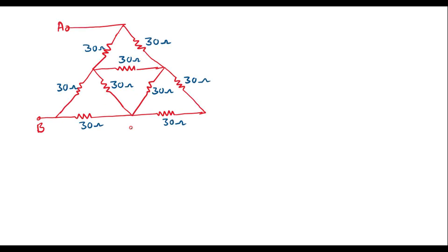By applying star-delta transformation, we should reduce this circuit. Here we can observe that this 30-ohm resistor, this 30-ohm resistor, and this 30-ohm resistor — these three resistors are connected in delta. I will try to convert these three resistors into star. The equivalent star network may appear like this, which is the equivalent star with respect to this delta connection.